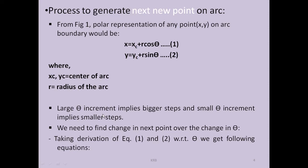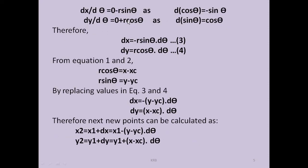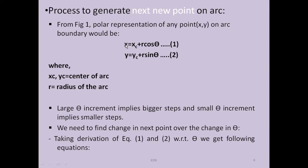A large theta increment implies bigger steps and a small theta increment implies smaller steps. To find the incremental parameters over the change in theta, we take the derivatives of the two expressions with respect to theta. Taking dx/dtheta: xc is constant so its derivative is zero, plus derivative of r·cos(theta) — r is constant so it remains, and derivative of cos(theta) is minus sin(theta). Therefore dx/dtheta = 0 − r·sin(theta).